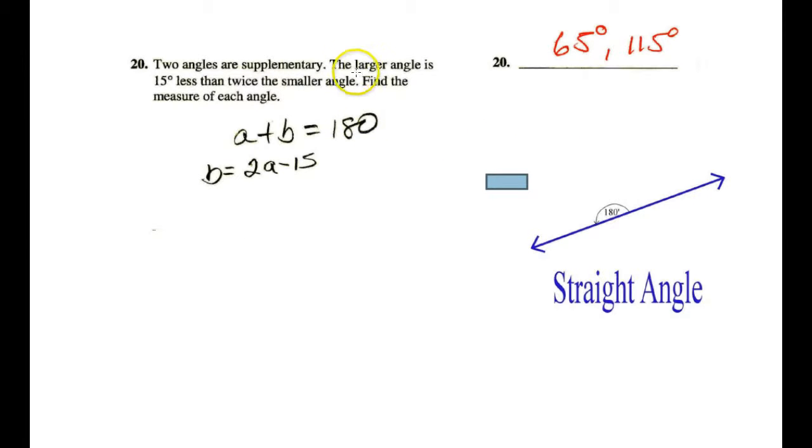So, we then go to the larger angle is 15 less than twice the smaller angle. Well, B, the larger angle, is 15 less than twice the smaller angle. There's our second equation. Now, you might say it's in this form. Again, the obvious would be to use substitution.